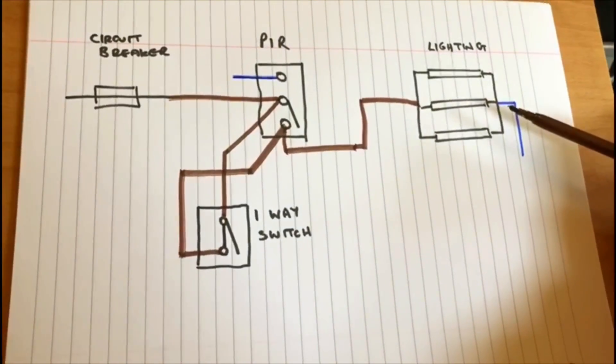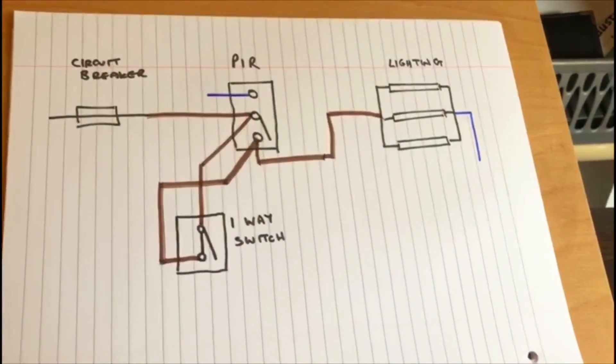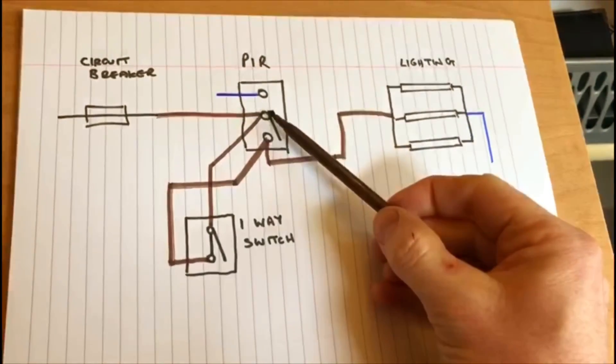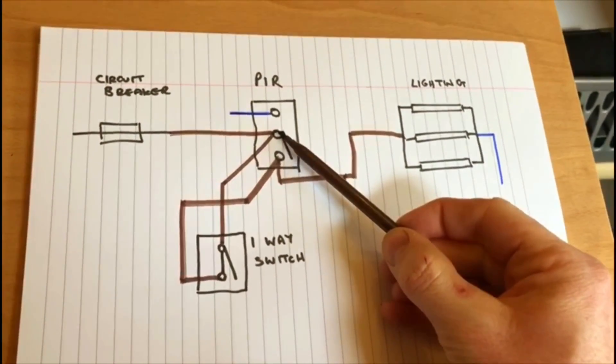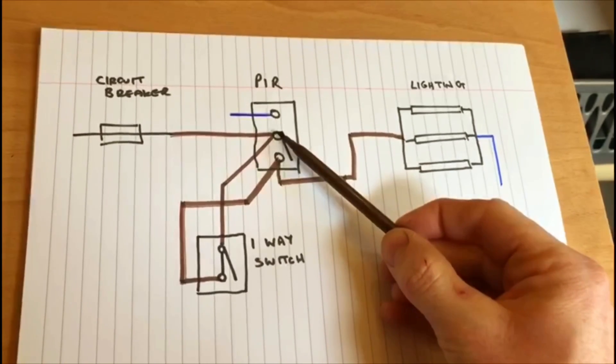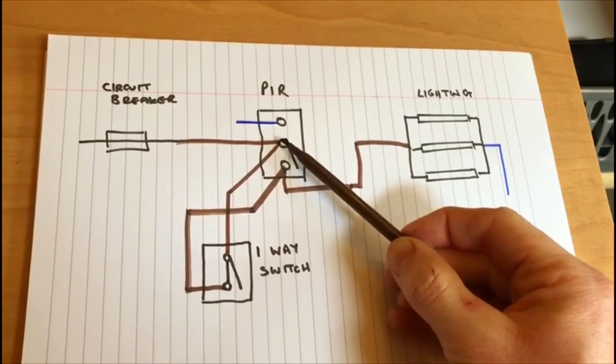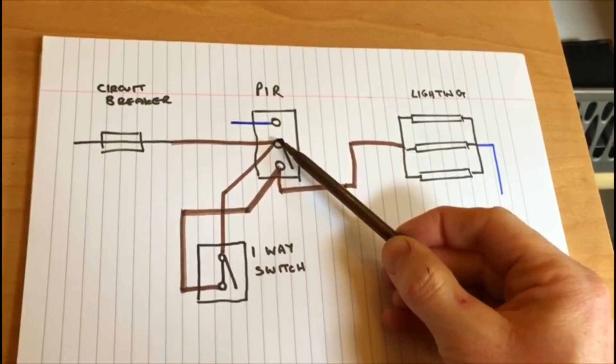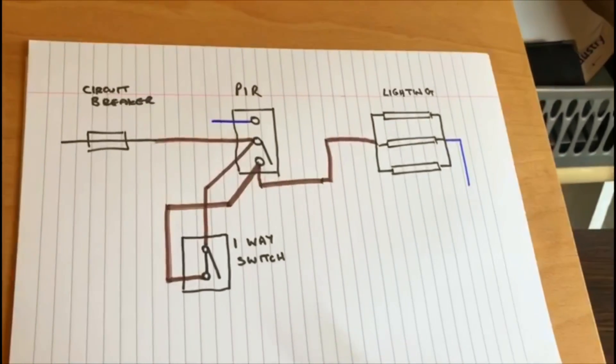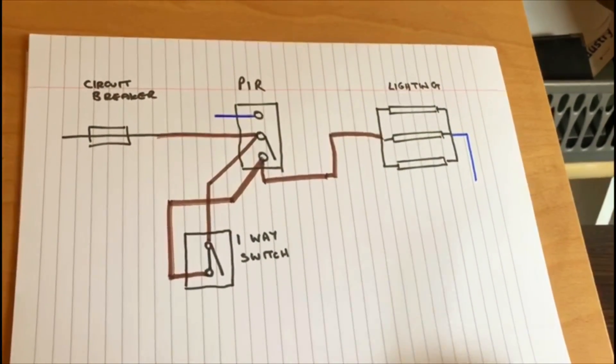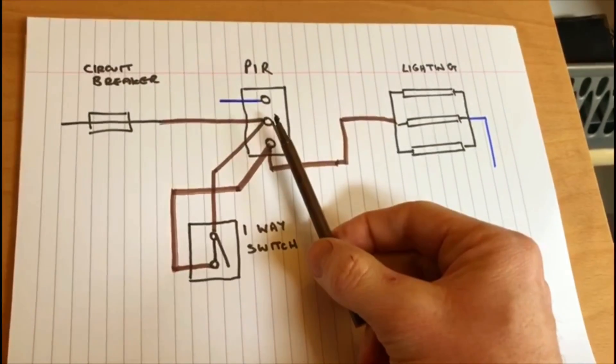And so that's relatively quite simple. Notice that we always have a permanent live supply going to the PIR. It's important that the PIR always has a permanent live supply going to it. You never want to switch the permanent live supply. The reason being is that these have got various electronic equipment inside that needs to be reset sometimes. So if you keep cutting the power to the PIR, that will cause various issues.